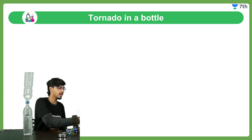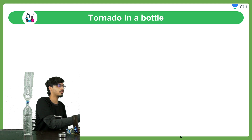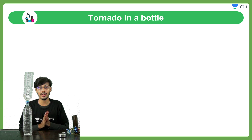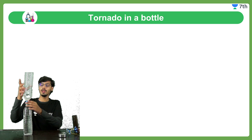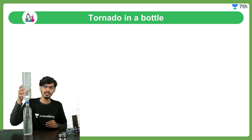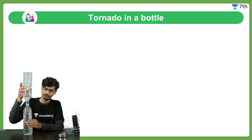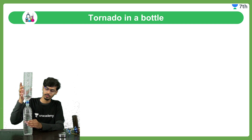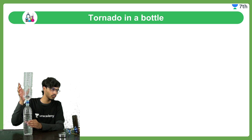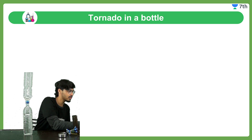So that is all for today. You have seen how to make a tornado in a bottle. Another thing you can notice is: if I do this, the water will come down. Let me open the secondary camera so you can see this better.